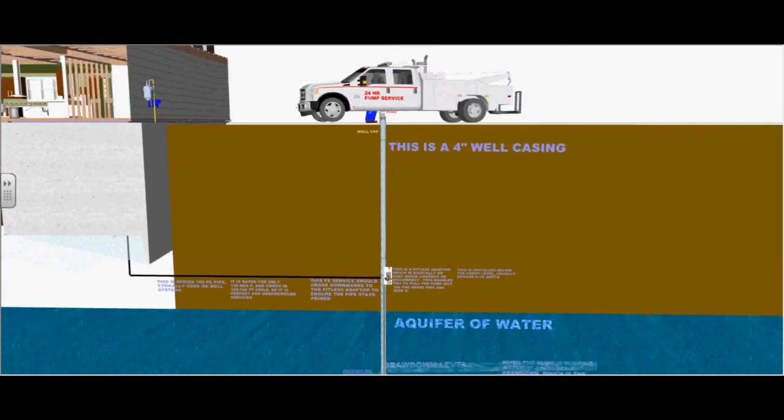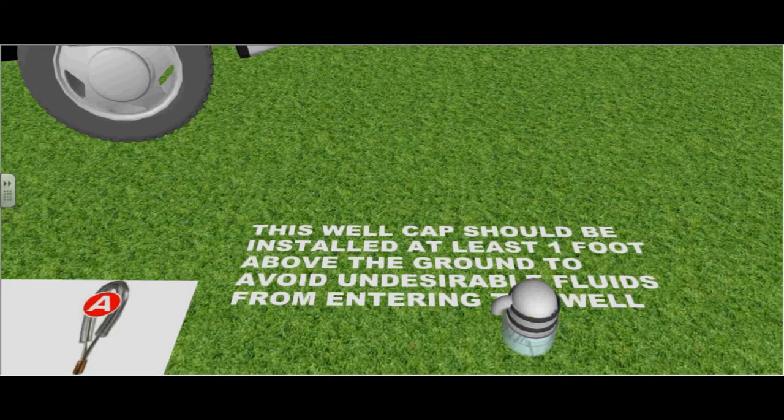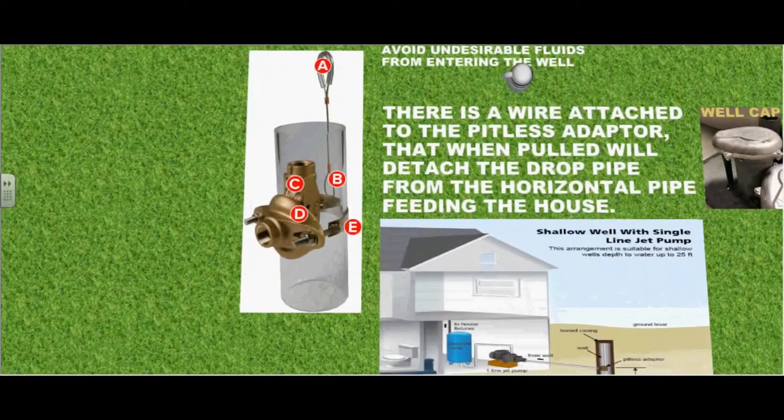This is a 4 inch well casing. This well cap should be installed at least one foot above the ground to avoid undesirable fluids from entering the well.